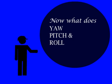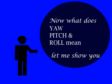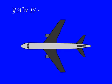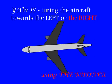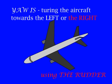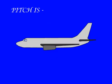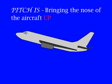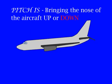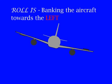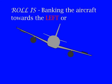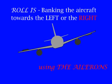Now, what does yaw, pitch and roll mean? Let's see. Yaw is turning the aircraft towards the left or towards the right with the help of the rudder. Pitch is bringing the nose of the aircraft up or bringing it down using the elevator. Roll is banking the aircraft towards the left or towards the right using the ailerons.